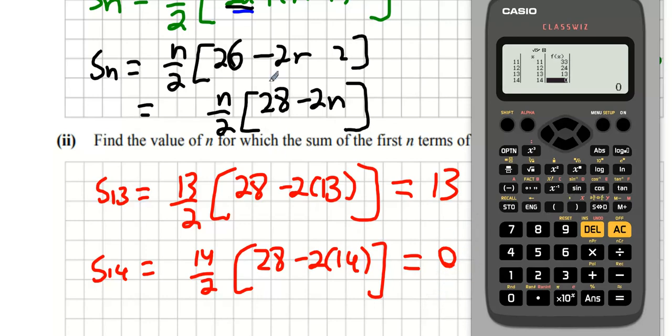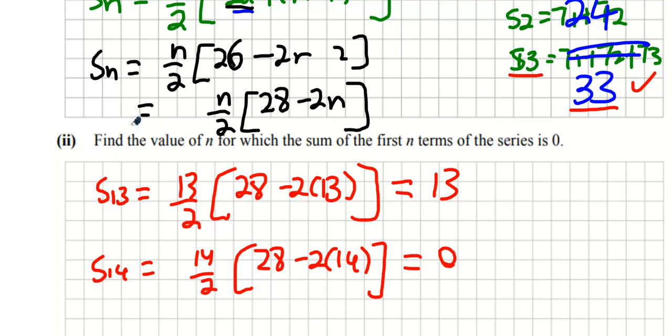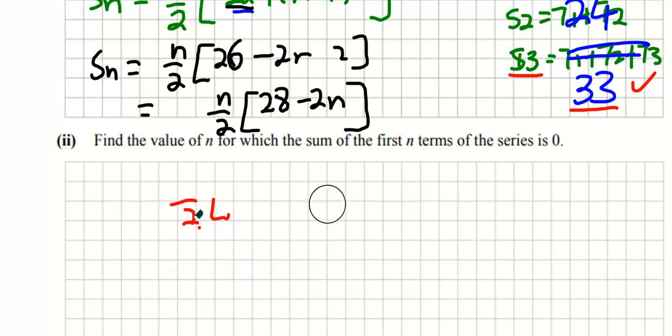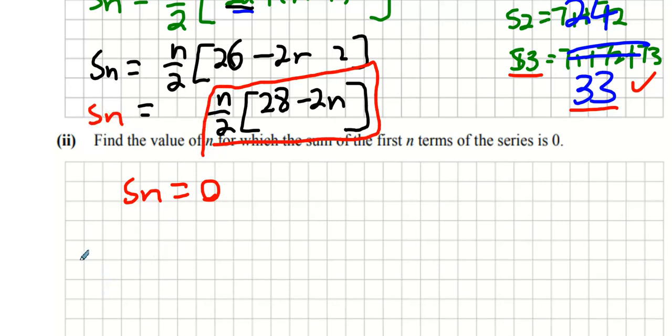Okay, now that's well and good and that will entitle you to high partial marks. Now what they're really looking for you to do is to put your Sn formula equal to zero. So your Sn formula equal to zero, you go Sn equals zero and here is your Sn formula, so you go n over 2 into 28 minus 2n.